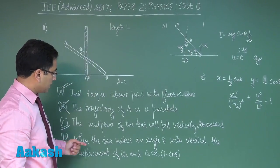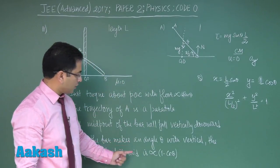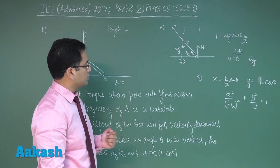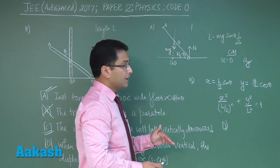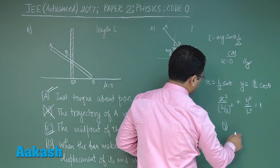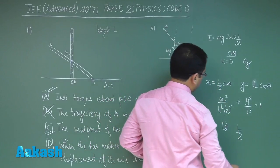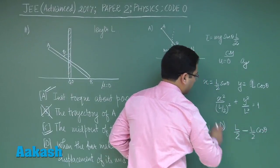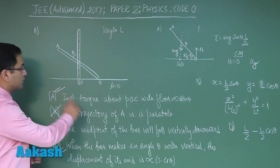Option D states: when the bar makes an angle theta with the vertical, the displacement of its midpoint is directly proportional to 1 minus cos theta. This is true because the midpoint falls only along the vertical direction. The initial height of the midpoint is L by 2, and at angle theta it is L by 2 cos theta, so the displacement is L by 2 times (1 minus cos theta), which is directly proportional to 1 minus cos theta. Option D is correct.